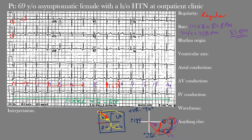Looking at the EKG: in lead I and lead II we want upright P waves — and we can see them clearly upright here. In the left lateral precordial leads V4, V5, and V6, the P waves are also upright. In aVR we see inverted P waves, as expected. The P waves have similar morphology throughout. There is a P wave before each QRS complex, and one P wave for every QRS complex. Therefore we are dealing with sinus rhythm — the origin of this rhythm is from the sinus node.